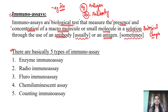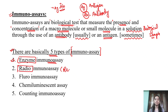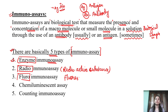Basically, we have 5 types of immunoassays. First is Enzyme Immunoassay — in this, specific enzymes are used. In Radio Immunoassay, radioactive substances are used. In Fluorescence Immunoassay, substances that are fluorescent are used. In Chemiluminescence Assay, you get illumination or luminescence phenomena. And lastly, there is Counting Immunoassay. These are basically the 5 types of immunoassays.